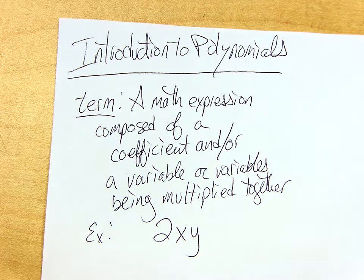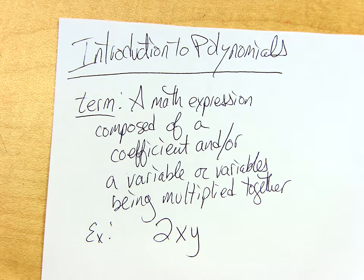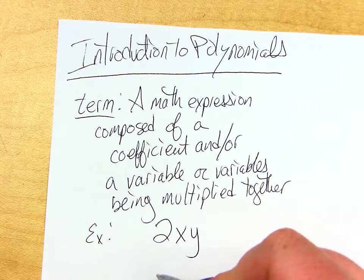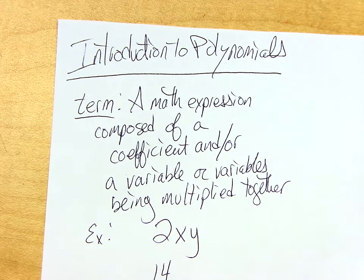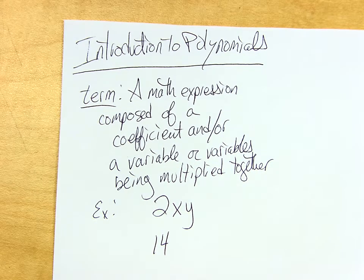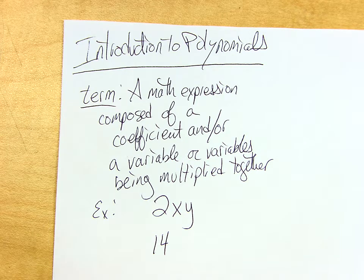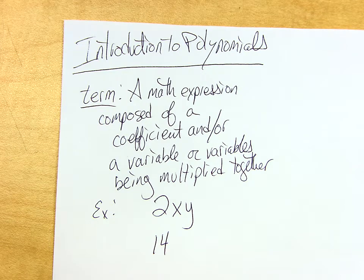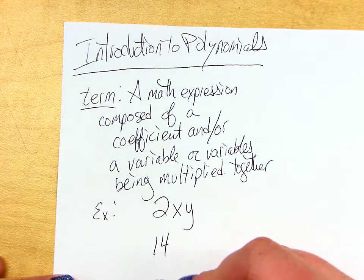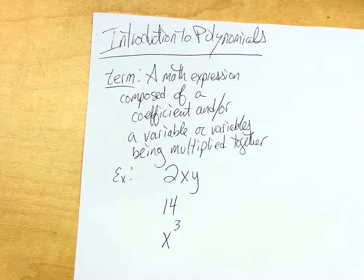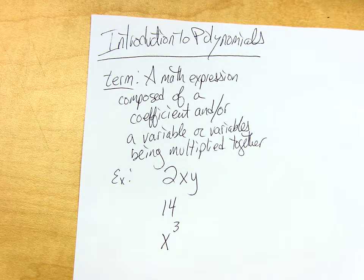You don't have to have all of these pieces. You could have just a number. You don't have to have any variables, and it still counts as a term. So, another example of a term might be 14. That's a term. This one just doesn't happen to have any variables. That's okay. It still counts as a term. I don't have to have, well, we always have a coefficient. Coefficient is just a number in the front. But, if it's a 1, we don't usually write it.